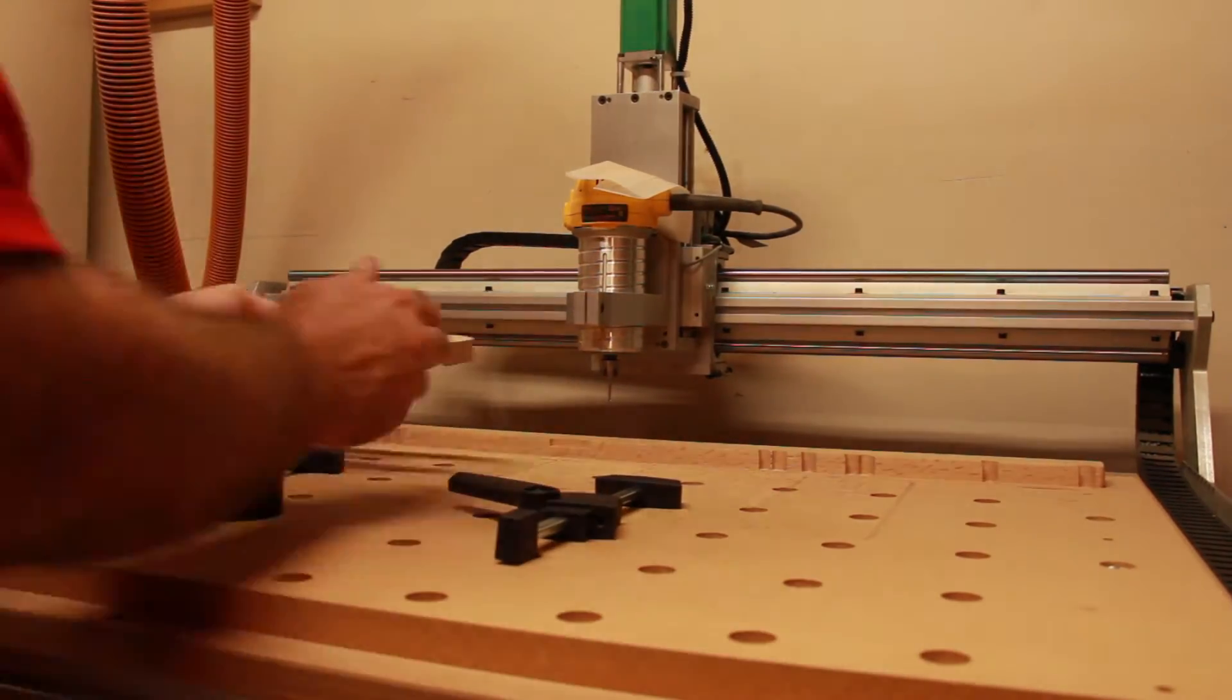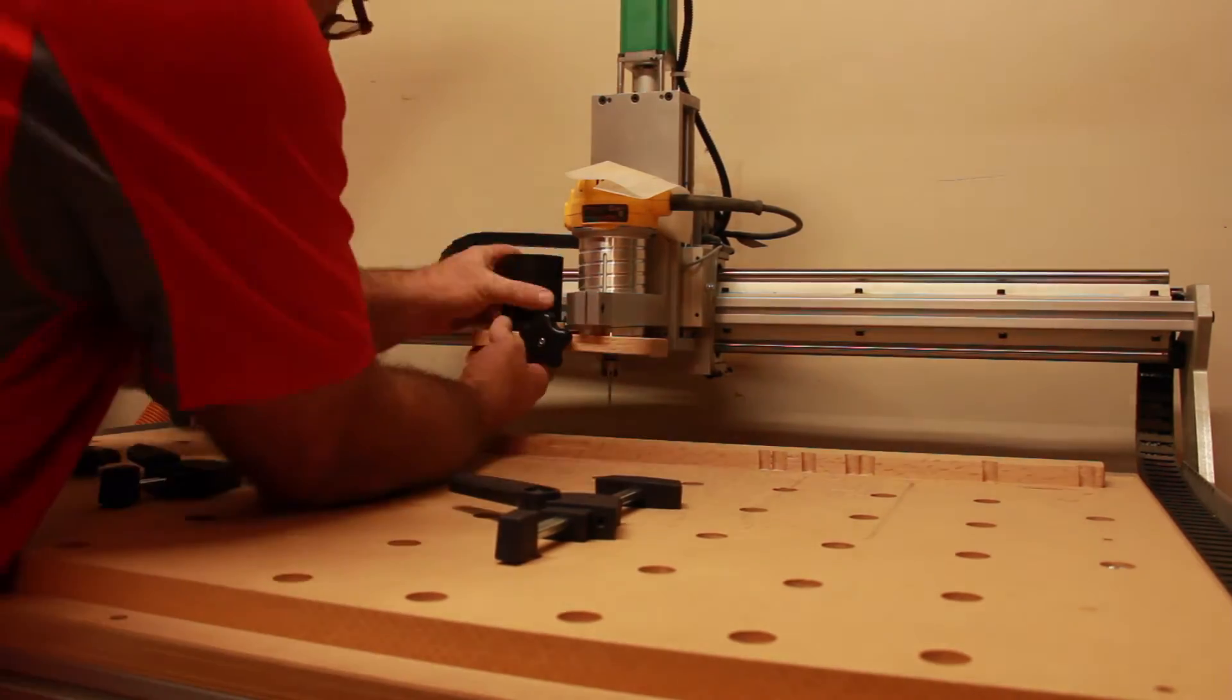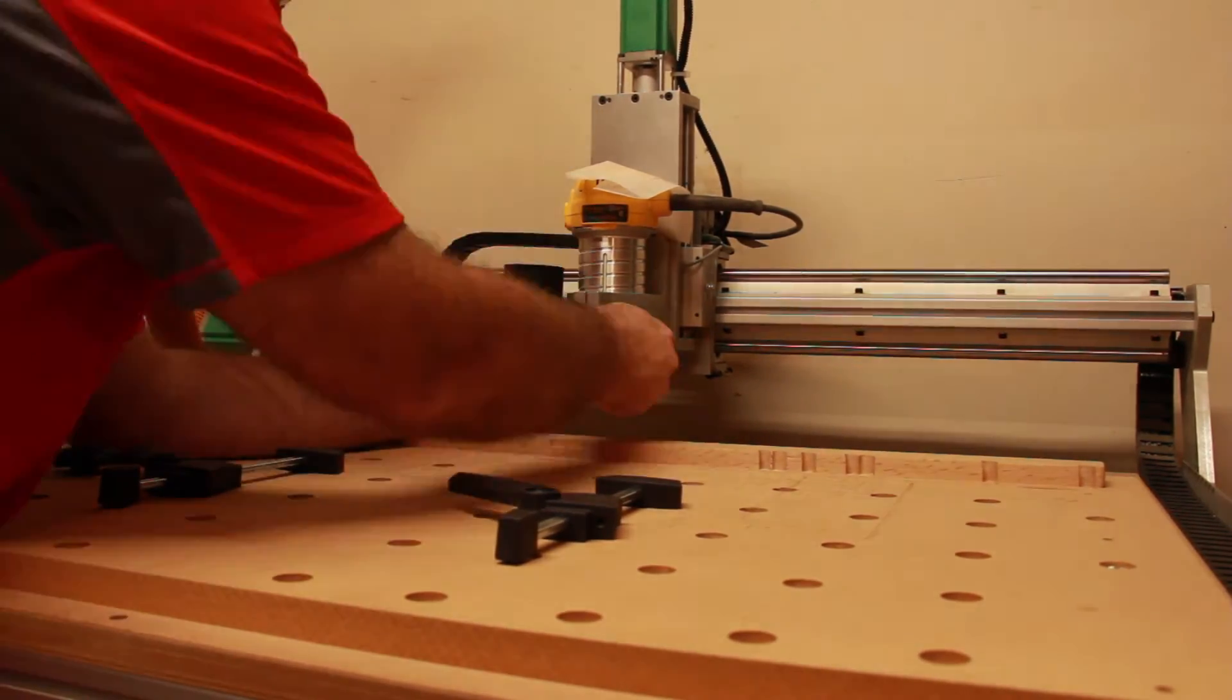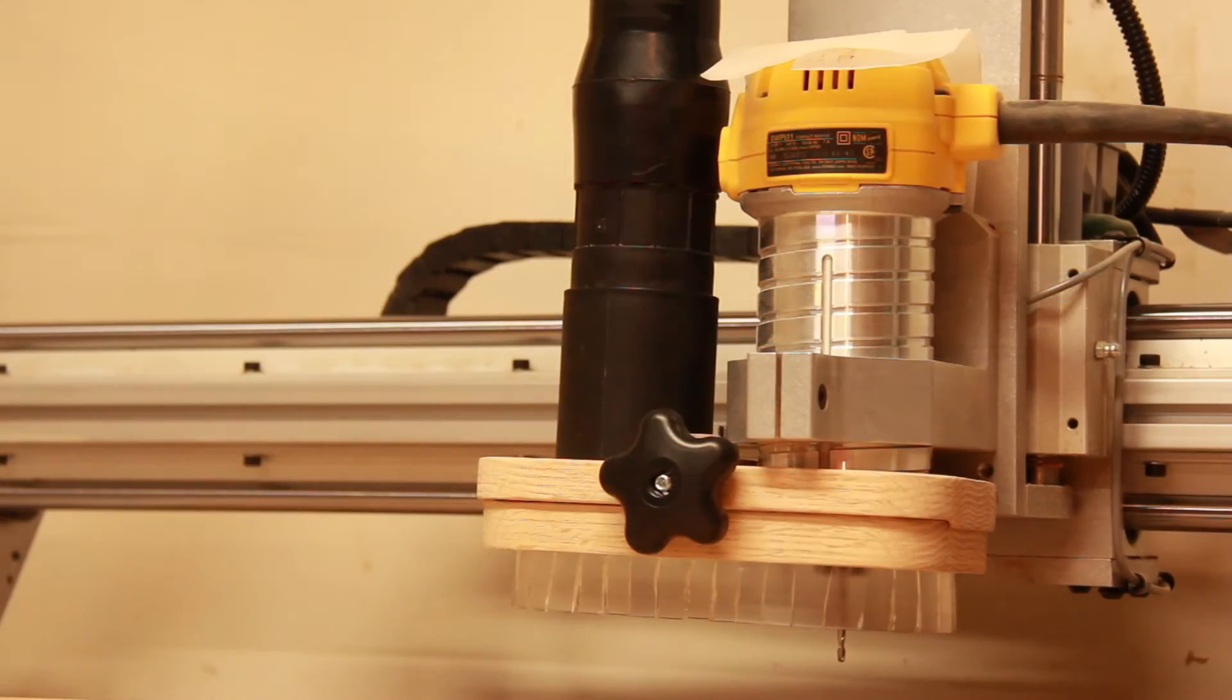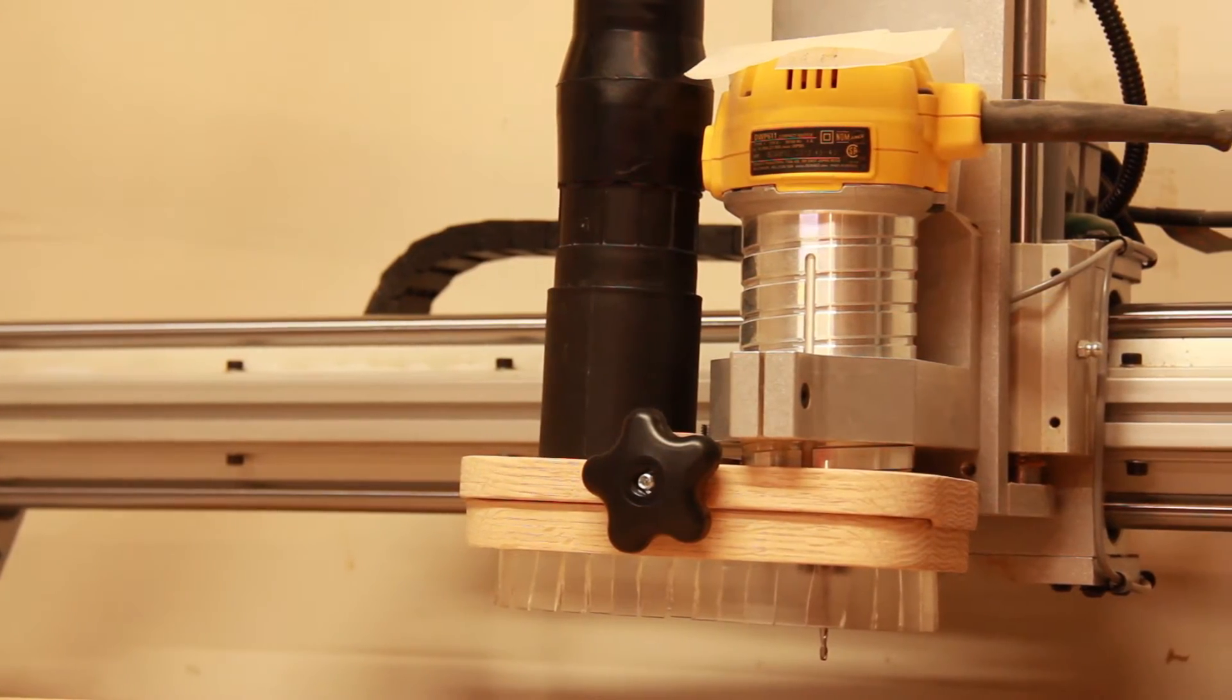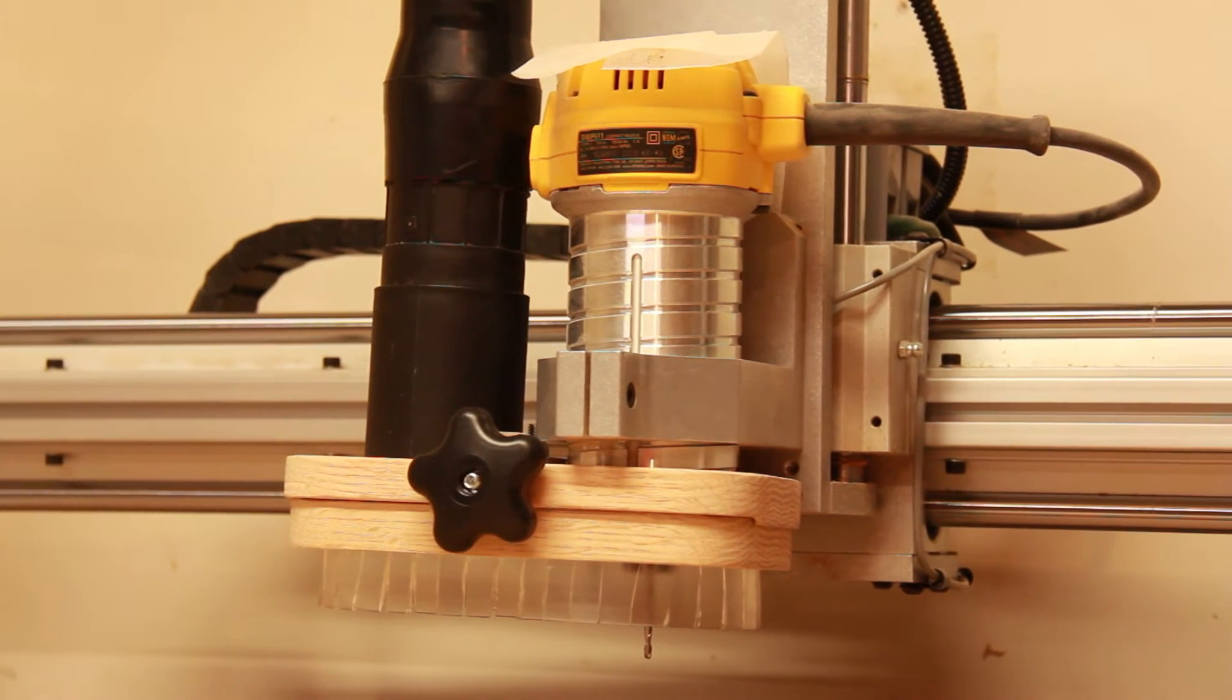We're going to dry fit the final assembly here. Putting on the main frame, installing the dust collection port, clamping it down to the router, and installing the dust curtain. This is what the final product looks like.